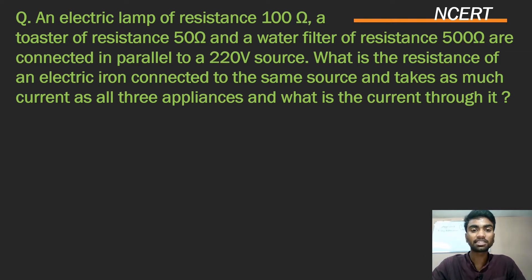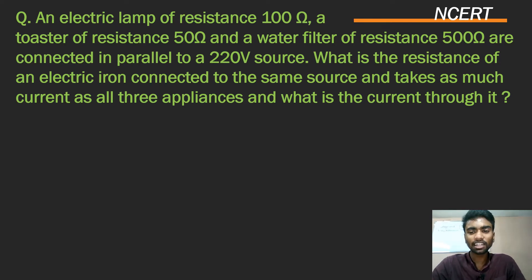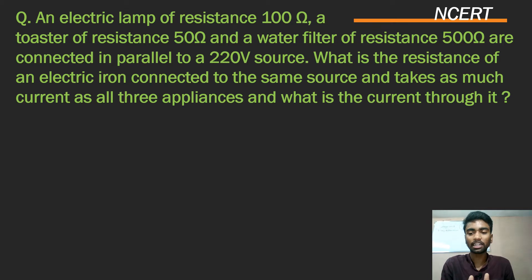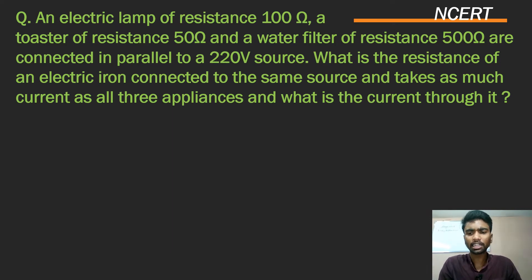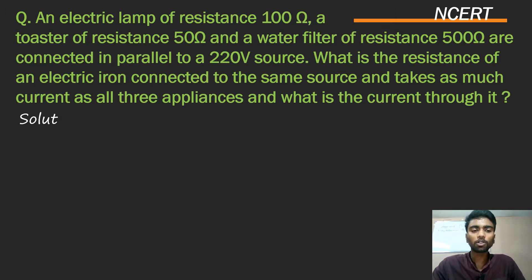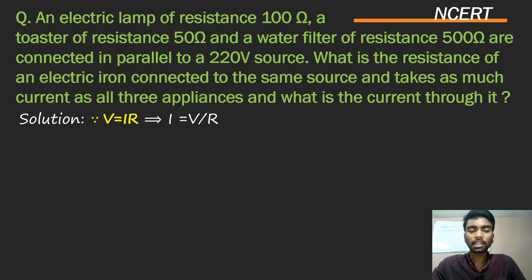We have electric lamp, toaster, and water filter — their resistances are given. We need to find the resistance of the electric iron. We'll use Ohm's law: V is equal to IR, and current is equal to V by R. We have electric lamp, so let's find current i1.